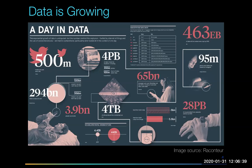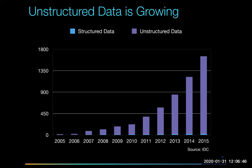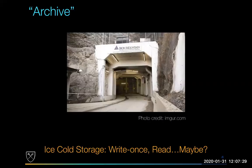More and more of that data isn't well structured. As storage people we're pretty good at handling structured data — if you give me a database, I know exactly how I want to store it, what its access pattern is going to be, how to design a cache for it, what kind of storage to give it. But that little blue at the bottom of the bar is your structured data; the rest is all unstructured. So most of this data we don't have nice parameters for how to deal with.